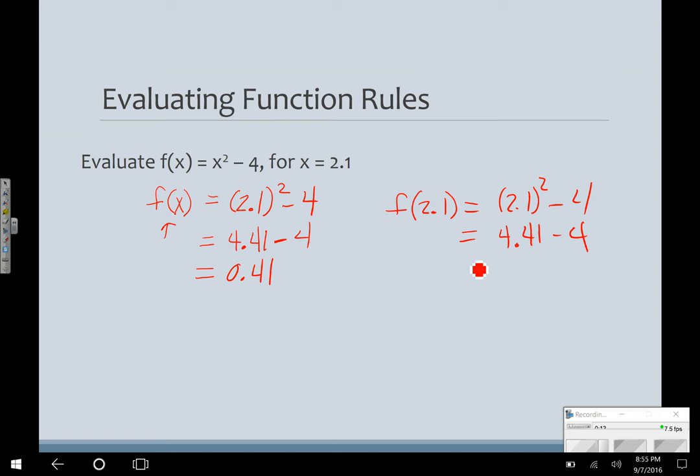I can leave this side alone and do the same thing. It's just preference what you want to do. But what this tells me when I put this 2.1 over here is that when my x value of this function equals 2.1, my y value or my output is 0.41. So it just gives you a little more specifics.